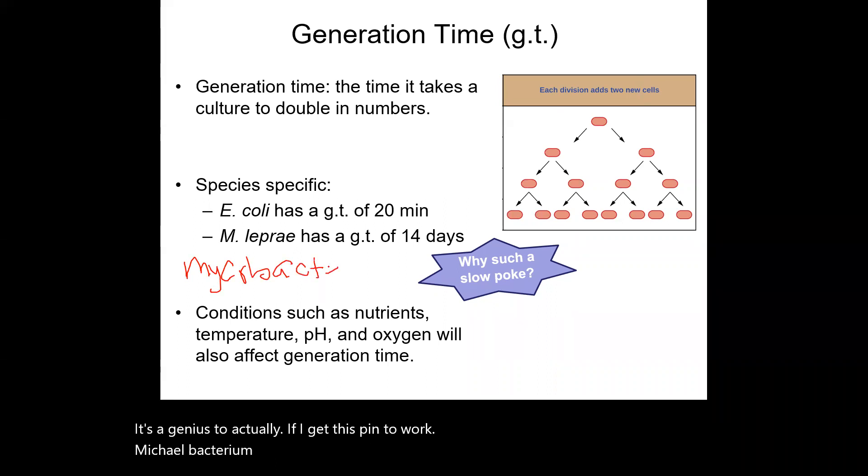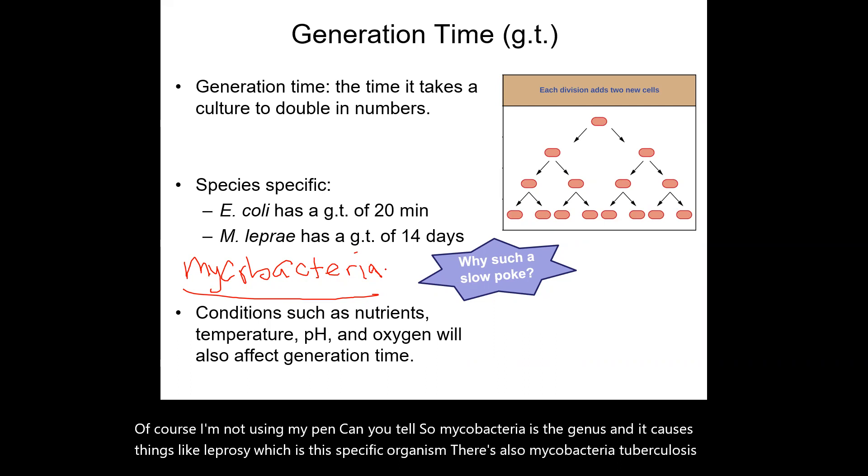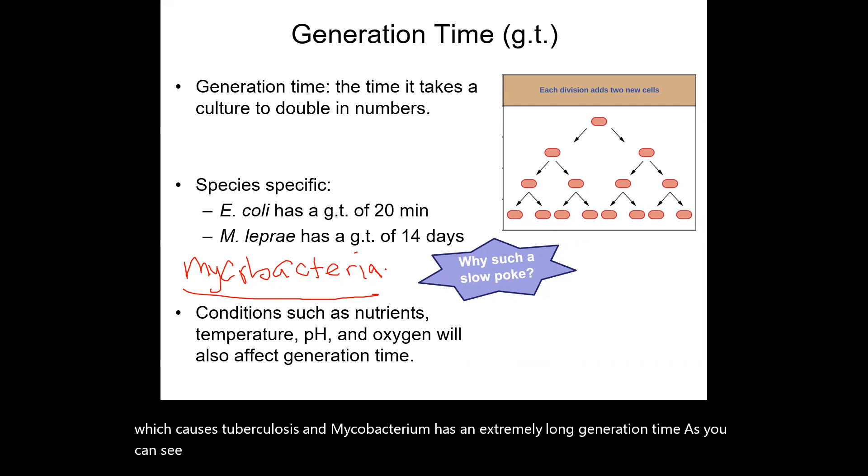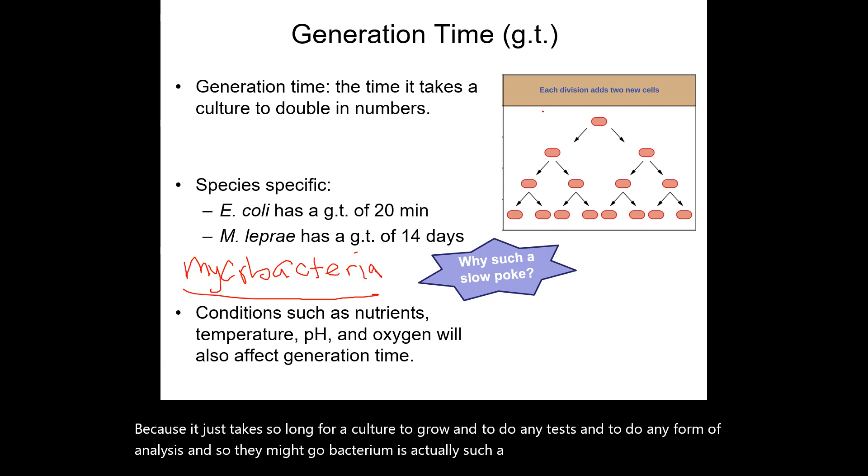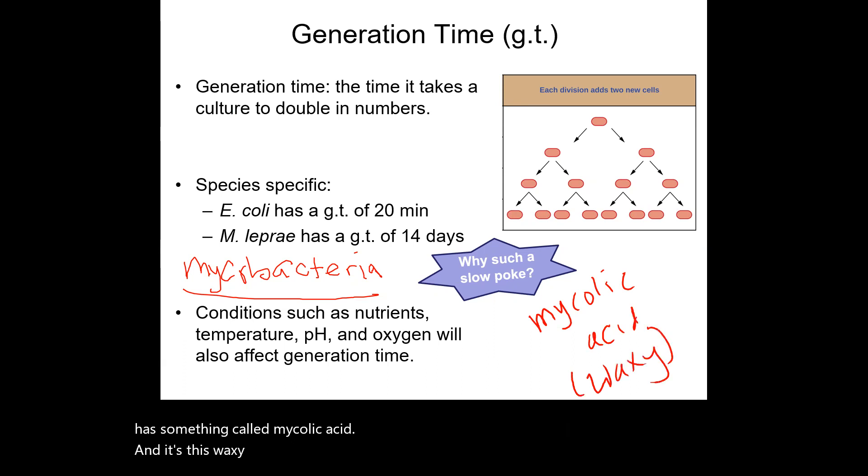Mycobacteria is the genus, and it causes things like leprosy, which is this specific organism. There's also Mycobacteria tuberculosis which causes tuberculosis. And Mycobacteria has an extremely long generation time. As you can see here, rather than 20 minutes, it's taking 14 days. And so it can take a really long time to diagnose somebody with a Mycobacteria infection because it just takes so long for a culture to grow and to do any tests and to do any form of analysis. And so the Mycobacterium is actually such a slowpoke because in its cell wall, it has something called mycolic acid, and it's this waxy substance in the cell wall that just takes a really long time to synthesize and go through the cell division process.